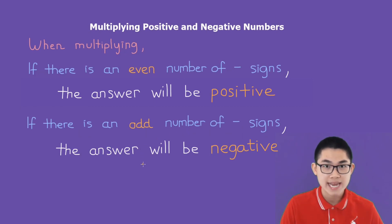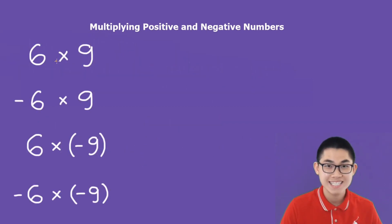then the answer will be negative. What is 6 times 9? Well, 6 times 9 will be 54. What is negative 6 times 9? There is 1 negative sign, which is an odd number of negative signs. So the answer will be negative. That's going to be negative 54.